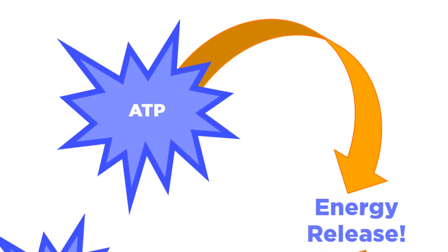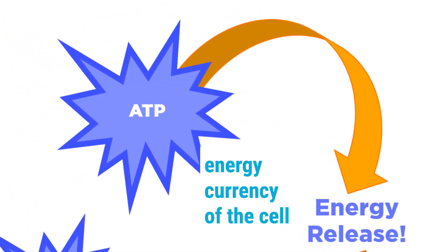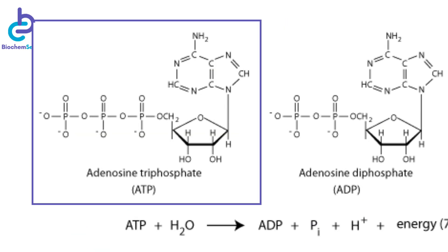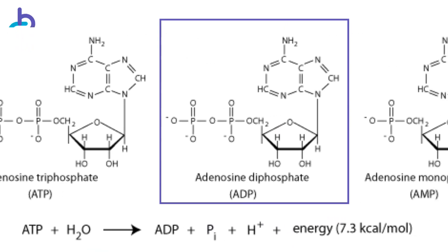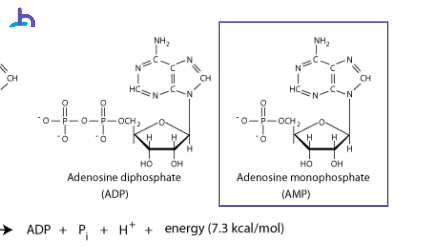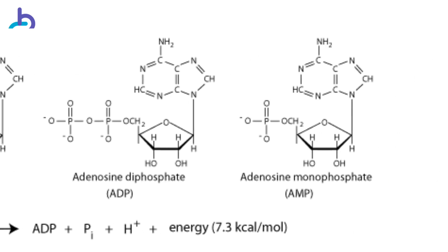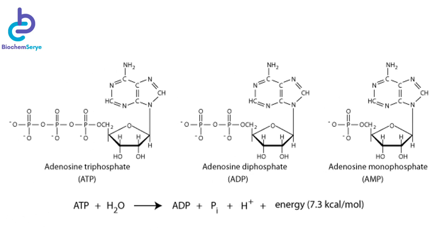ATP is often referred to as the molecular unit of currency of intracellular energy transfer. When ATP is hydrolyzed to release energy, it is converted either to adenosine diphosphate or to adenosine monophosphate. Other processes regenerate ATP so that the human body recycles ATP each day.